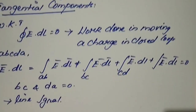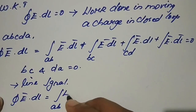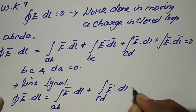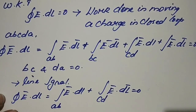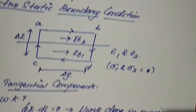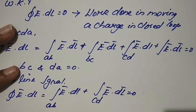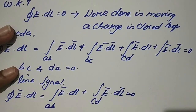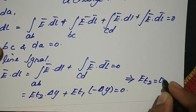So the closed integral E dot dl reduces to contributions from ab and cd only, equal to 0. Because of segment ab we have the E_t2 path, and because of segment cd we have the negative direction. This gives E_t2 times delta y plus E_t1 times negative delta y equals 0, which finally gives E_t2 equal to E_t1.